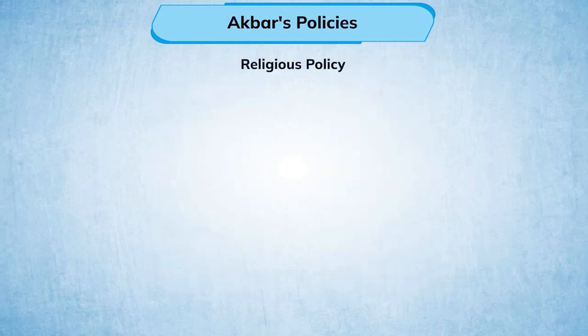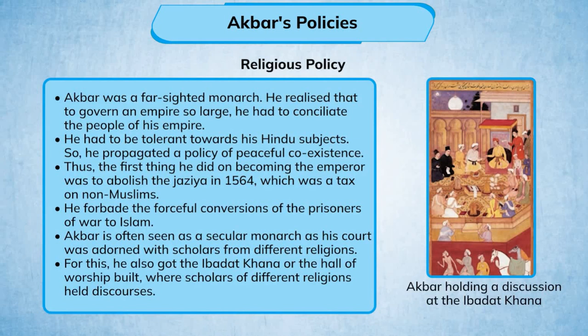Religious policy: Akbar was a far-sighted monarch. He realized that to govern an empire so large, he had to conciliate the people of his empire and be tolerant towards his Hindu subjects. He propagated a policy of peaceful coexistence. The first thing he did on becoming emperor was to abolish the Jazia in 1564, which was a tax on non-Muslims.